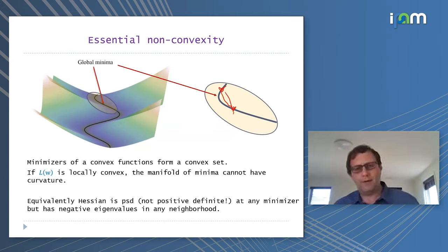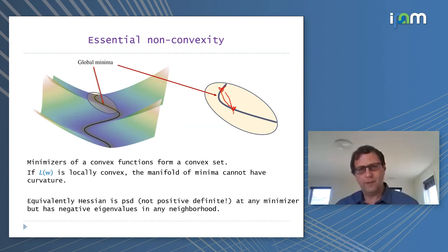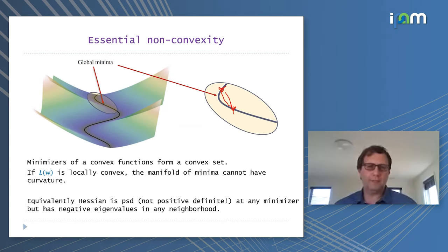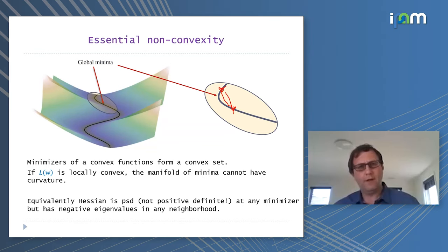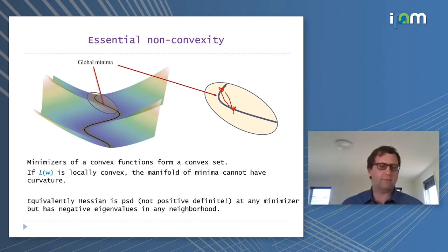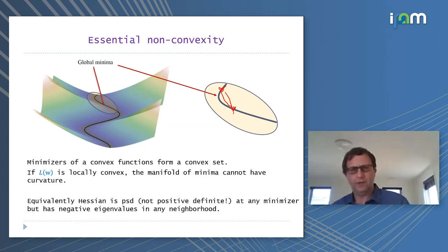We see that generically there is non-convexity, and it's unavoidable. Equivalently, the Hessian matrix of the loss is positive semi-definite at every point on the curve, but it is not positive definite in any neighborhood of that point — in any neighborhood of any point on the curve, there is at least one point with some negative eigenvalue.